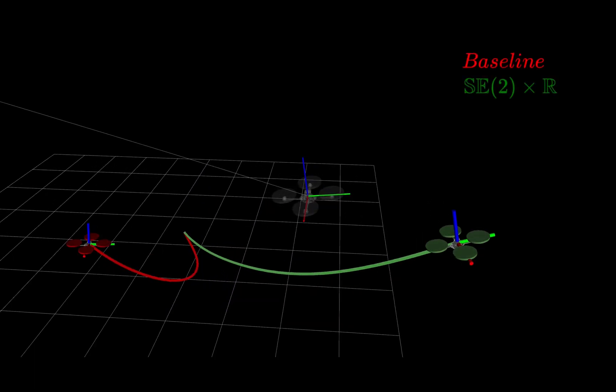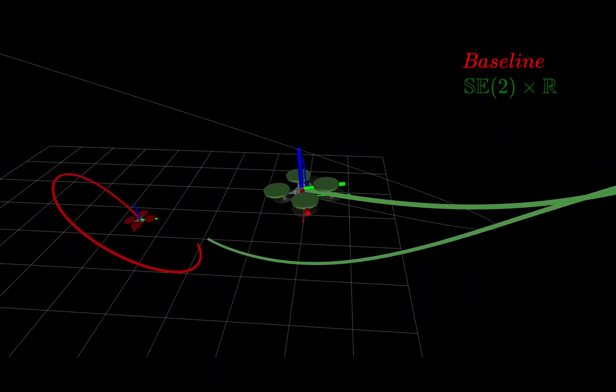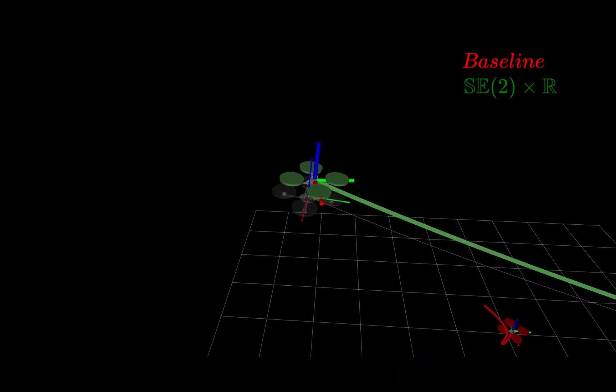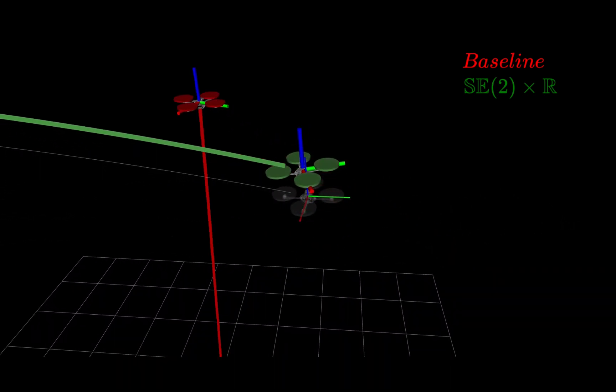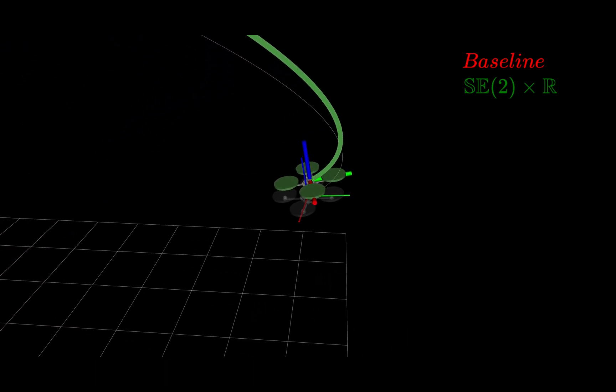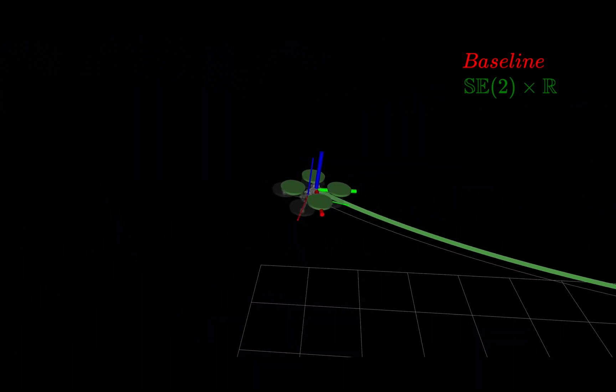For the quadrotor, an aerial robot whose SE3 symmetry is broken by gravity, we show that an observation which replaces the reference and actual poses by their pose error and the gravity direction in body coordinates outperforms the baseline full state observation.